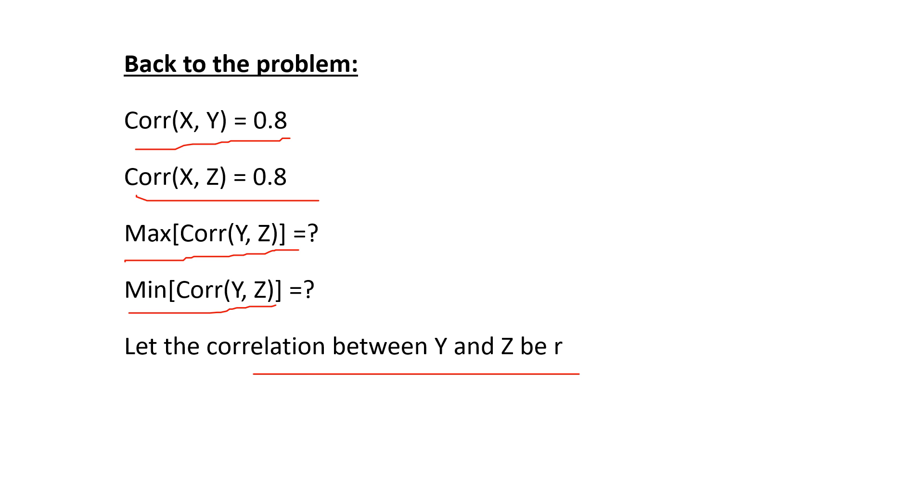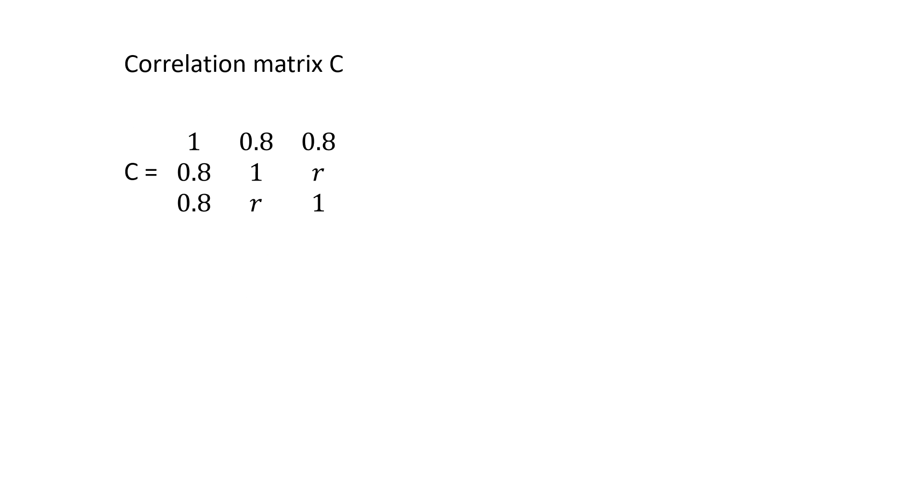So the correlation matrix can be written like this. We have the correlation between X and Y 0.8 and X and Z 0.8, and the correlation between Y and Z we have assumed r.